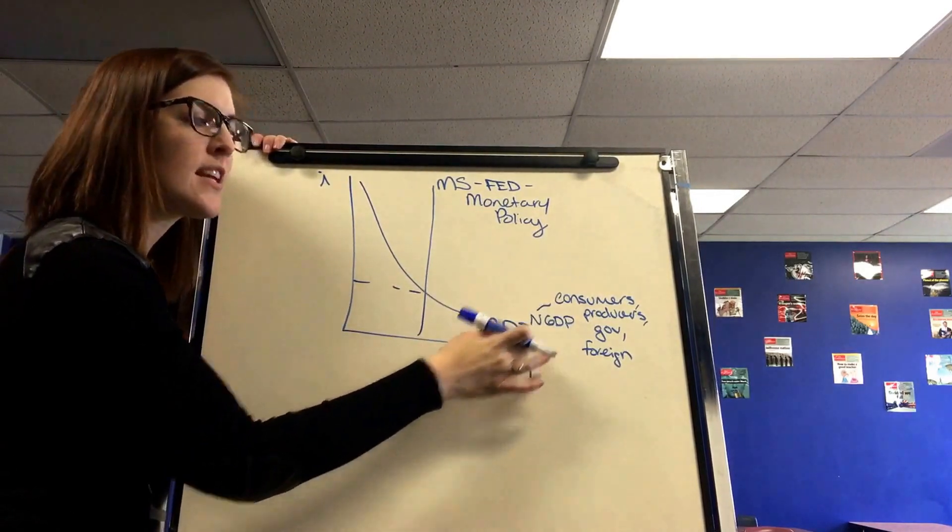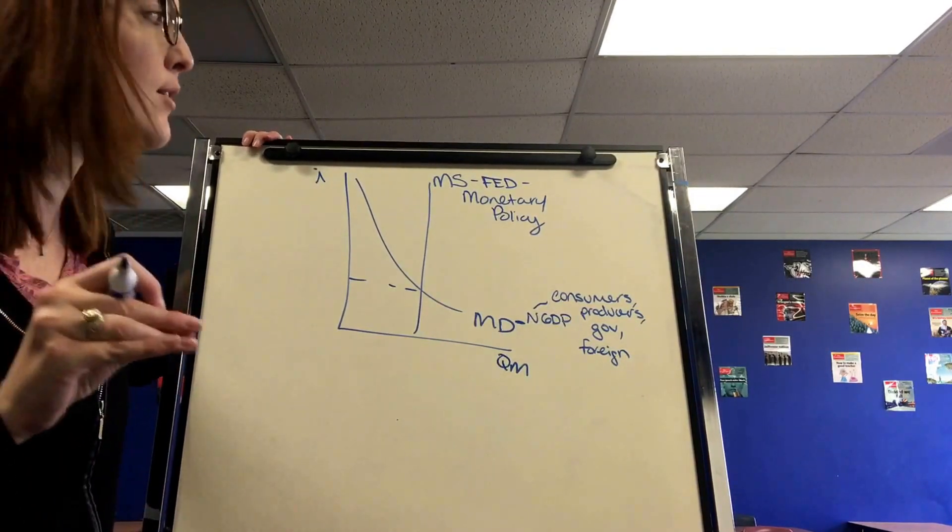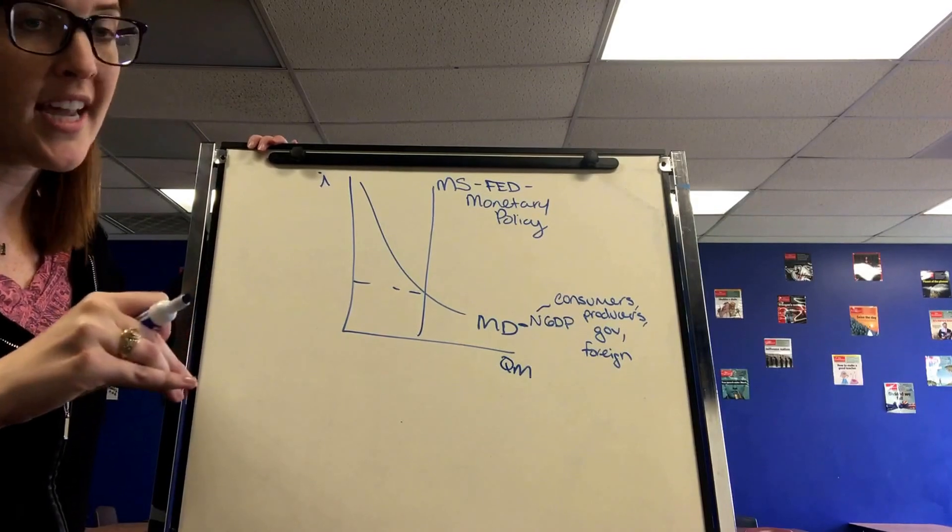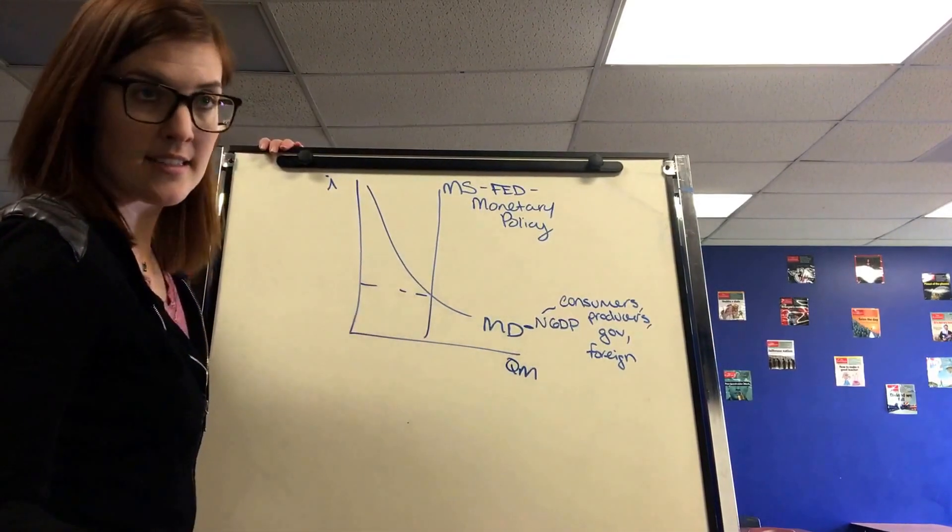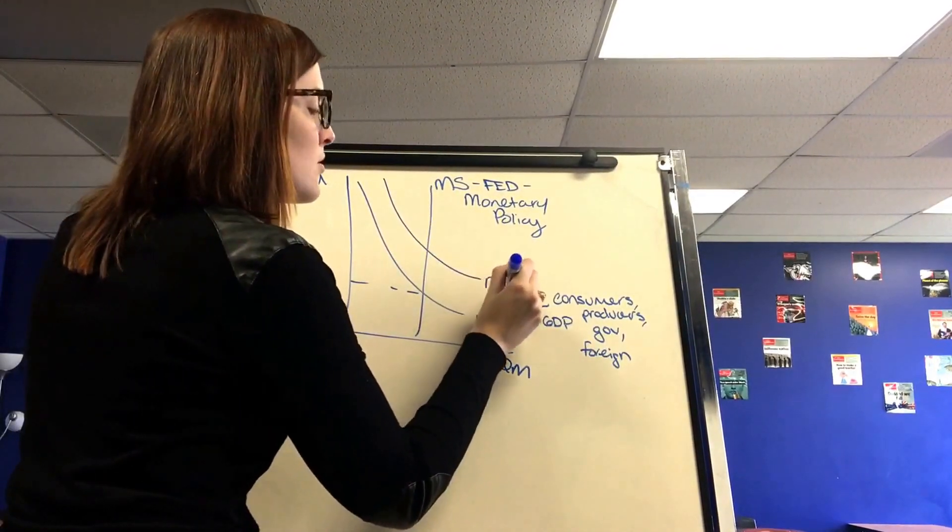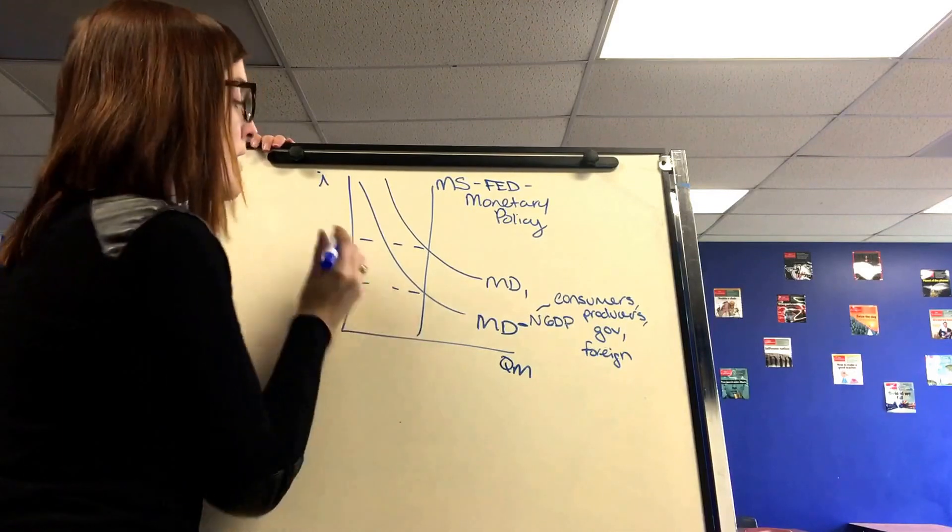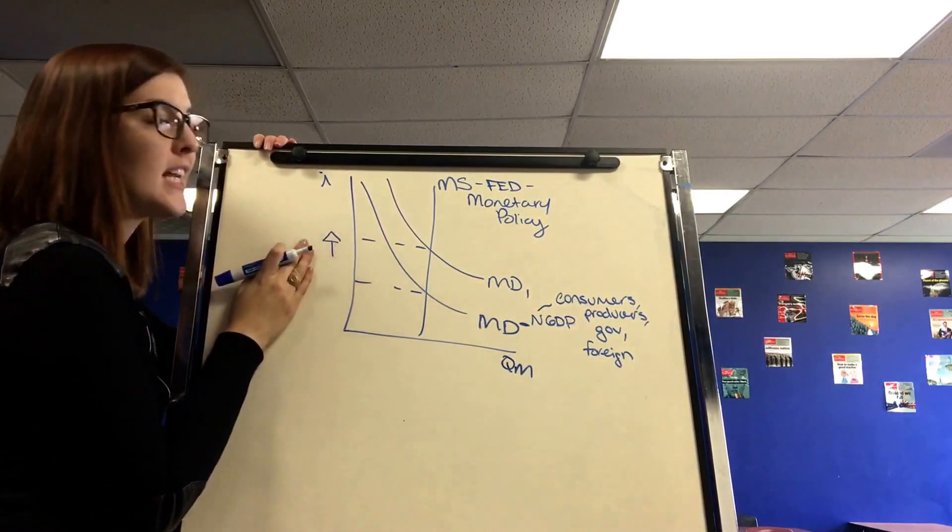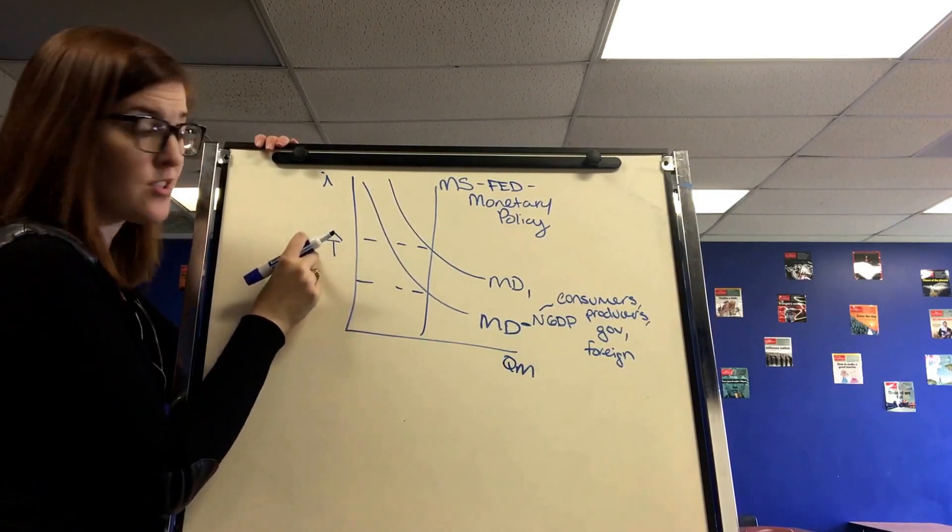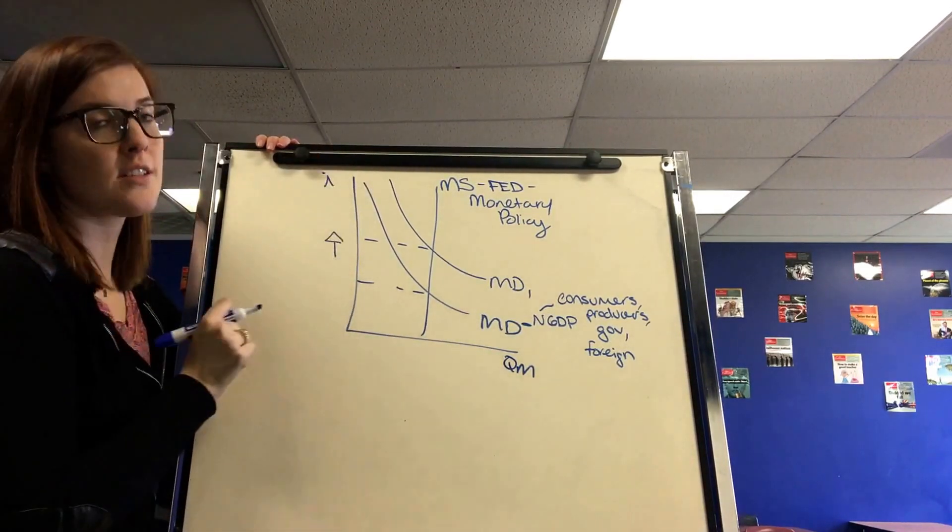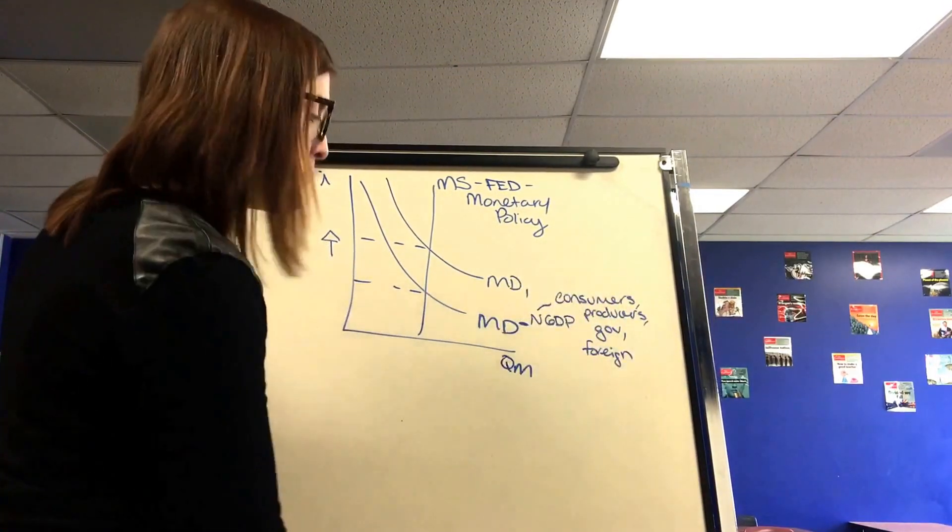But you need to know what moves it just in case they ask a question like the government decreases taxes. What would happen on the money market graph? Because they're trying to trick you to make you think the government can move money supply. But they can't. They can only move money demand. If that were an example, if the government decreased taxes, this would end up increasing the money demand because nominal GDP would go up. And what we notice is that the quantity of money does not change because they have no power over it. But what does happen is that ends up raising interest rates, which really helps with the crowding out effect when we get to fiscal policy. So it is a criticism. They are trying to fight a recession and it does end up increasing interest rates. But we'll get into the crowding out effect in the next unit. But remember, only the Fed can move the money supply. So everyone else moves the money demand line.